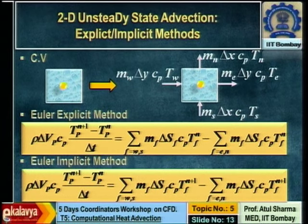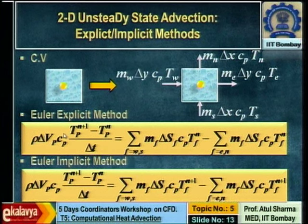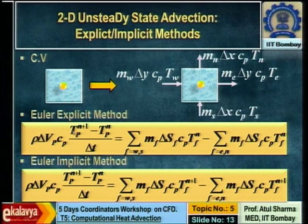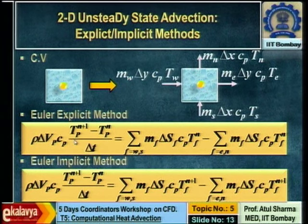A student asks why we call it Euler explicit and Euler implicit. The word Euler is used because this discretization is called Euler forward discretization for time.